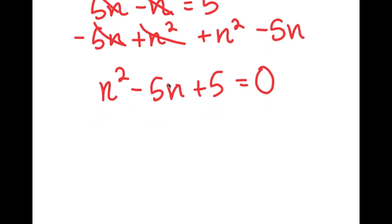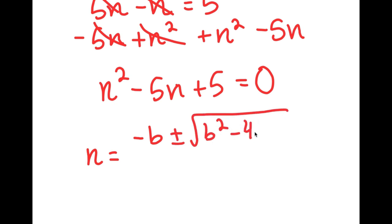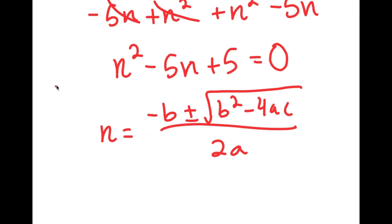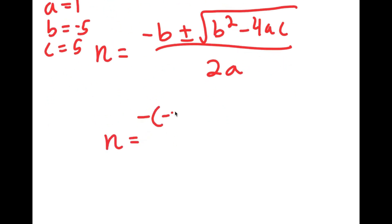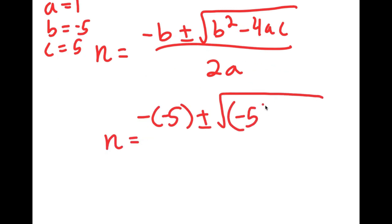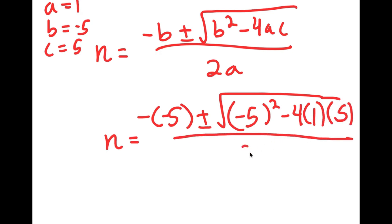From here, to solve this, I can use the quadratic formula, which is negative b plus or minus the square root of b squared minus 4ac, all over 2a. In this case, a is 1, b is negative 5, and c is positive 5. So I get n is equal to negative of negative 5, plus or minus the square root of negative 5 squared minus 4 times 1 times 5, all over 2 times 1.